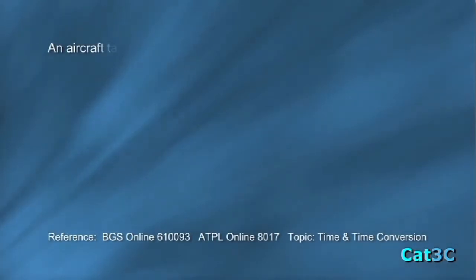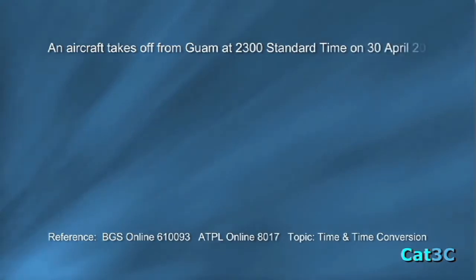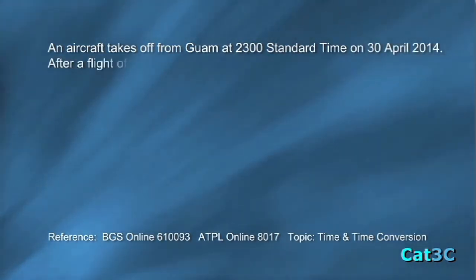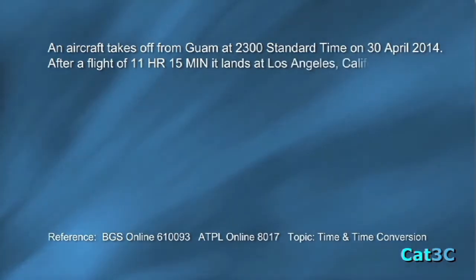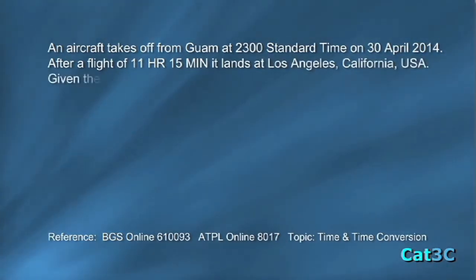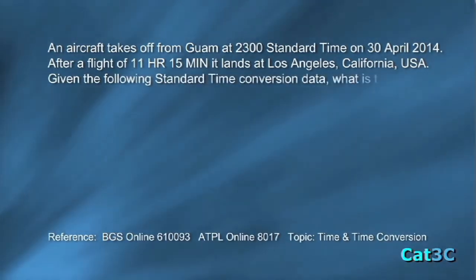An aircraft takes off from Guam at 2300 hours standard time on the 30th of April 2014. After a flight of 11 hours and 15 minutes, it lands at Los Angeles, California, USA. Given the following standard time conversion data, what is the standard time and local date of arrival, assuming summer time?